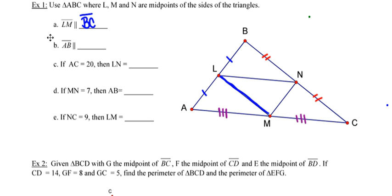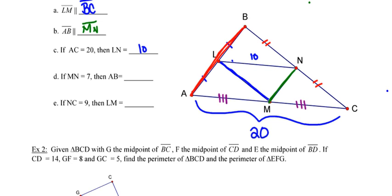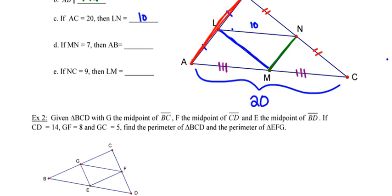Looking at segment AB — that red segment — it's parallel to its mid-segment MN, so segments AB and MN are parallel. Next, segment AC has a length of 20. Since LN is the mid-segment for side AC, its length will be half of 20, making the length of LN equal to 10. In part D, the length of MN is 7. Since MN is the mid-segment for AB, AB must be double that, making the length of AB equal to 14.